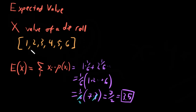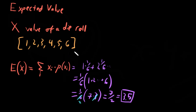If this was an unfair die, meaning one of these numbers was more likely to come up than the others, then the expected value would not simply be the average — it would shift towards whichever number is more likely. If we were 1,000 times more likely to roll a six than any other number, then the expected value of our unfair die would be very, very close to six. But since we're talking about a fair die, it's just the average, because every single probability is the same.